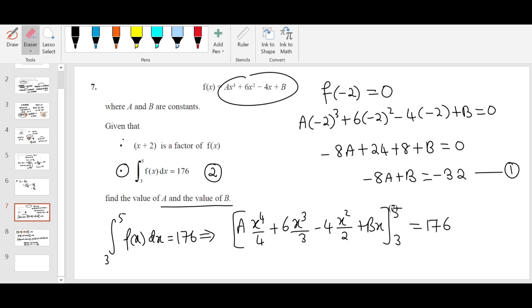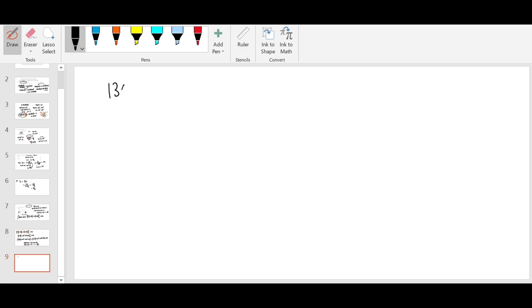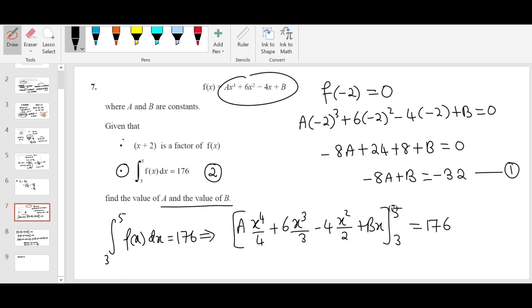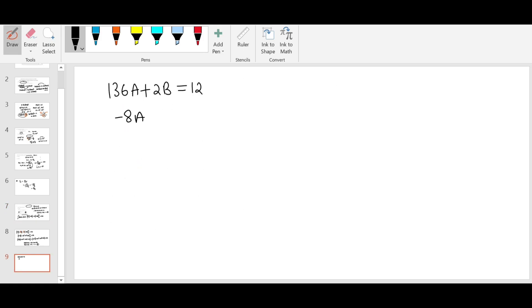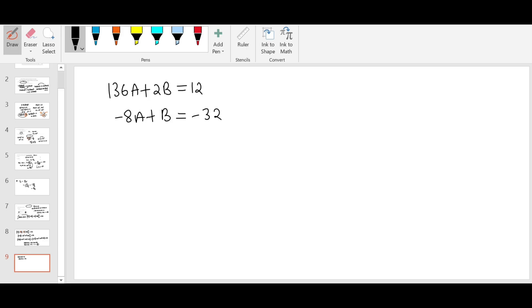You have to carefully frame the equation. If you want, you can double check. So we have equation 1 here, equation 2 here. We need to solve the simultaneous equations. Take the equations separately: 136A plus 2B equals 12, that's equation 2. Minus 8A plus B equals minus 32. So I'm going to multiply the second equation by 2. First equation stays the same. Multiply the second equation times 2, we'll get minus 16A plus 2B equals minus 64.